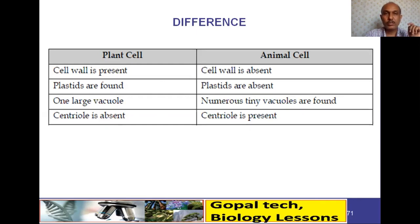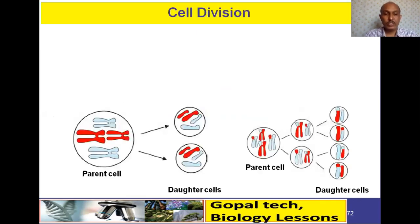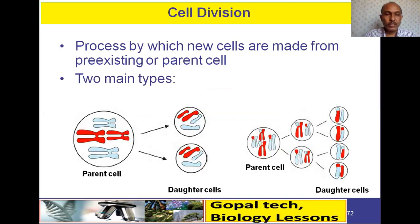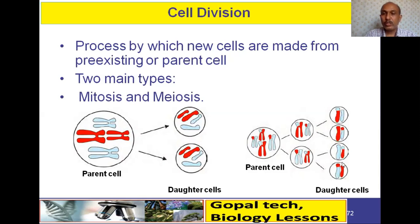Now, cell division. A parent cell divides into two or four daughter cells. The process by which new cells are made from a pre-existing or parent cell is called cell division. There are two main types: mitosis, where two daughter cells are produced, and meiosis, where four daughter cells are produced.